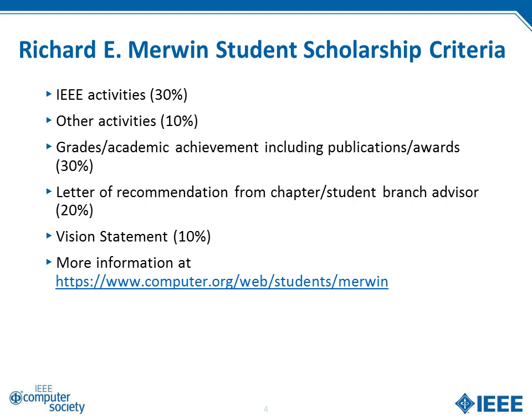There are several different criteria for the Merwin Scholarship. About 30% of the grading is based on your IEEE activities, taking into account what you've done as opposed to just listing your position on your resume. About 10% goes to other activities, which could be just about anything, including sports, church groups, charity groups, showing the breadth of your involvement and interaction with other people. 30% goes to grades and academic achievement, and can be bumped up by including publications and various other awards that you've won. 20% goes to letters of recommendation, which have to be from your chapter or student branch advisor. And 10% comes from a vision statement of what you intend to do as a student ambassador. There's more information at www.computer.org/web/students/Merwin.